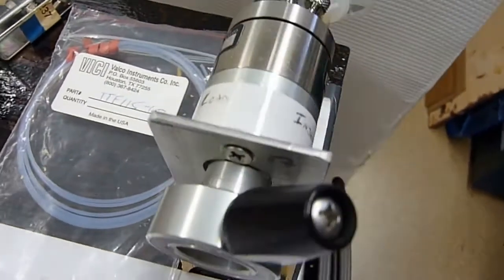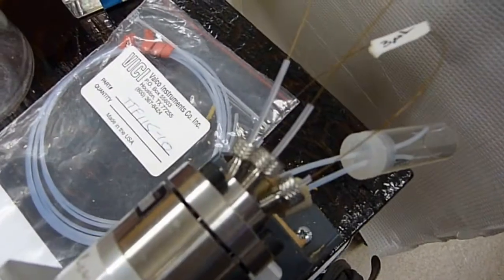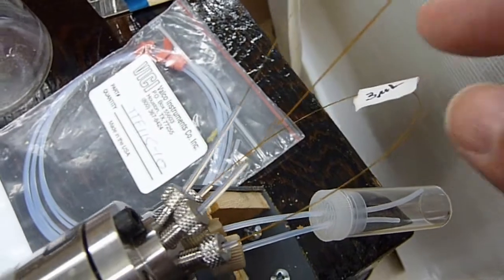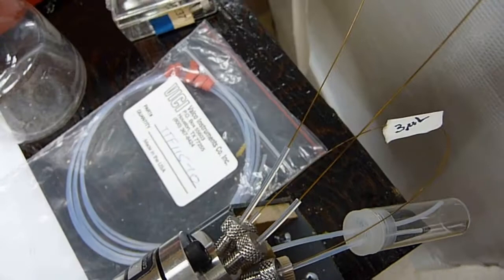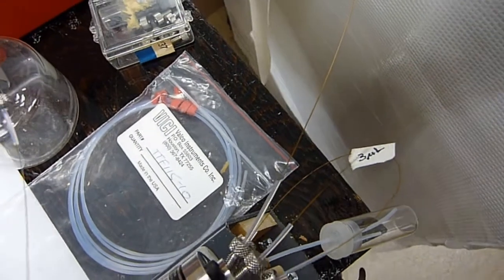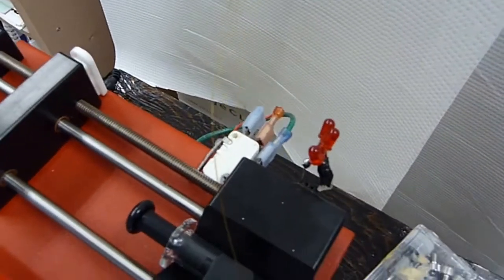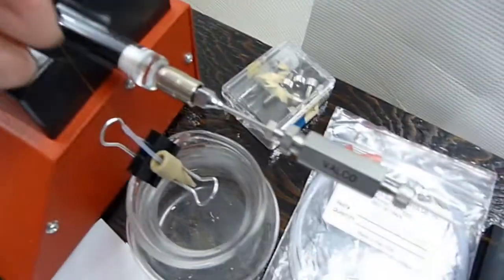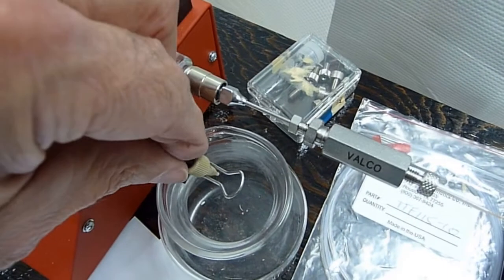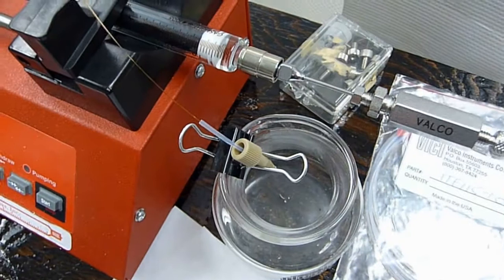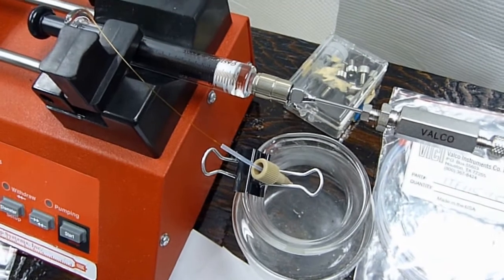And then this has been set up. So we have a three microliter loop. And it's a six port injection valve. And the solvent makes its way to this is what's going to be connected to the mass spec. So next we'll take it up and hook it up to the mass spec.